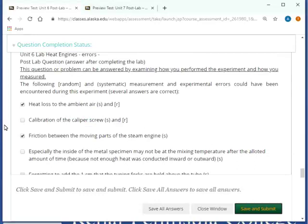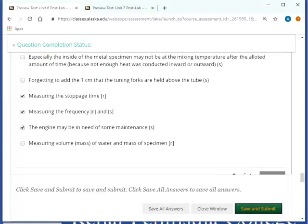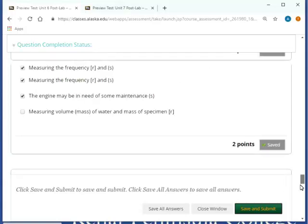Errors. There are a few errors involved here. Not as much as for the heat capacity lab, but there are a few. So heat loss of the ambient air friction between the moving parts of the steam engine, measuring the stoppage time, measuring the frequency. The engine may be in need of some maintenance. Yep. So systematic random errors. That's what the S and R stand for.